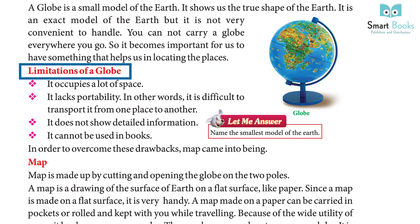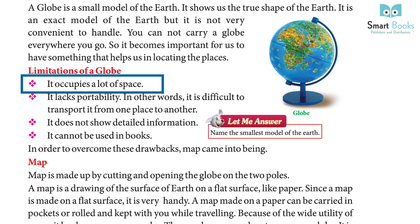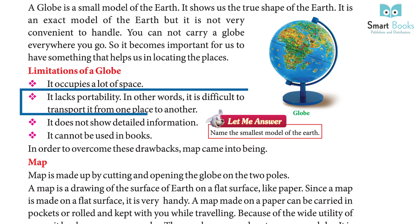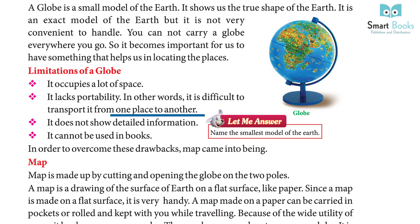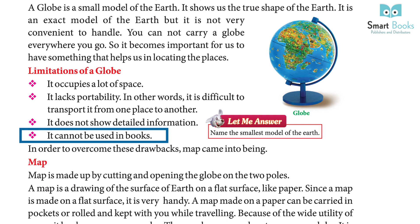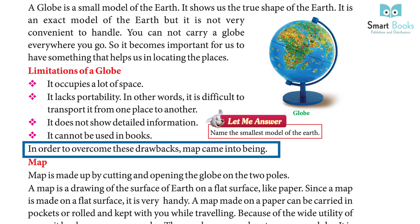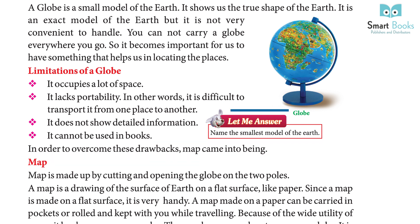Limitations of a globe: it occupies a lot of space, it lacks portability — in other words, it is difficult to transport from one place to another, it does not show detailed information, and it cannot be used in books. In order to overcome these drawbacks, the map came into being.